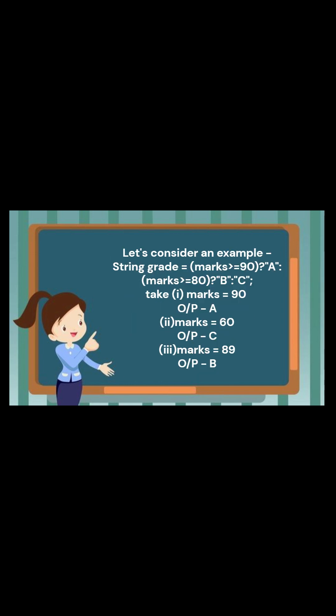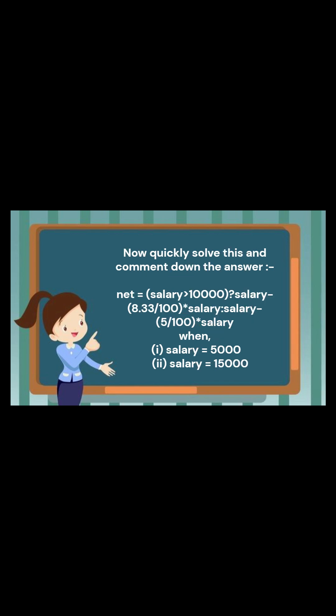Let's consider an example of a multi-branching ternary. Taking marks equals 90 evaluates to A as the condition is true, so statement 1 gets executed — the part just after the question mark. Taking marks equals 60 evaluates the grade variable to C as none of the conditions are true, so the final else statement runs. Similarly, considering marks equals 89 prints B as the second condition is true, so the block after the second condition gets executed. Now quickly solve this and comment down the answer.